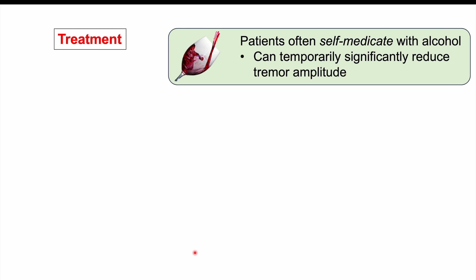Once the clinician has made the diagnosis, treatment is considered. It is important to note that patients will often self-medicate with alcohol, because alcohol can temporarily and significantly reduce tremor amplitude — often quoted at a 50 to 70% reduction. However, this is temporary and not a treatment clinicians will recommend.